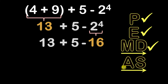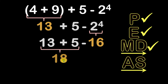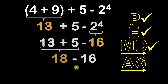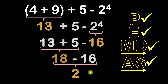Now we'll go to step four, which is adding or subtracting from left to right. We'll start at the left and read across. 13 plus 5 is 18, so I'll put 18 right under. I'll bring down the minus sign and the 16. Now 18 minus 16 equals 2. Since there's no more addition or subtraction, we're done with step four. Our final answer is 2.